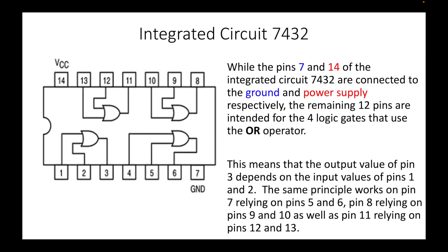Pins 7 and 14 of integrated circuit 7432 are connected to ground and power supply respectively. The remaining 12 pins are intended for the four logic gates that use the OR operator. The output value of pin 3 depends on the input values of pins 1 and 2. The same principle works on pin 7 relying on pins 5 and 6, pin 8 relying on pins 9 and 10, and pin 11 relying on pins 12 and 13.